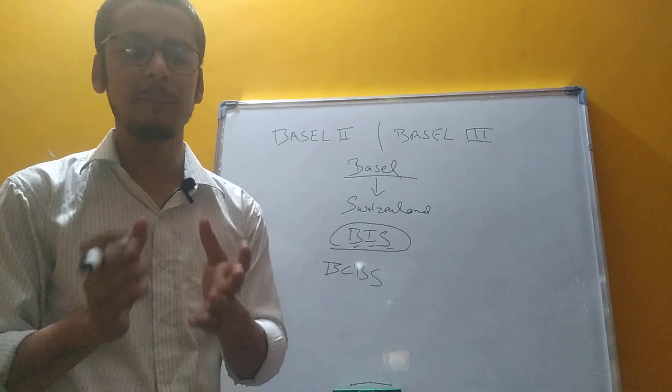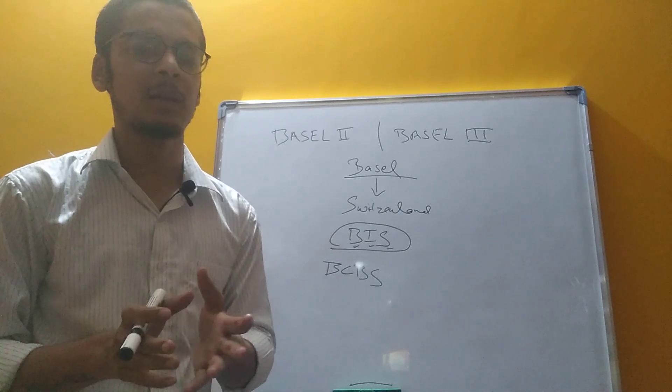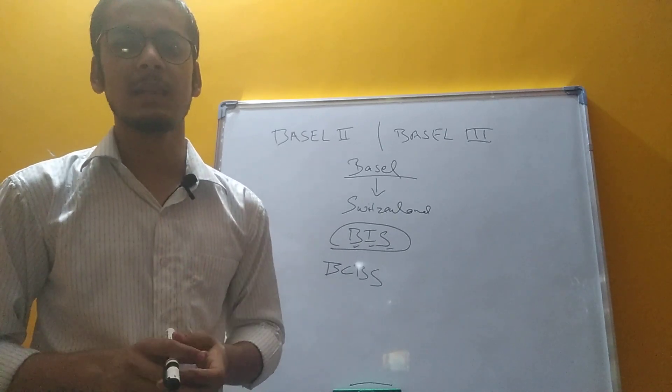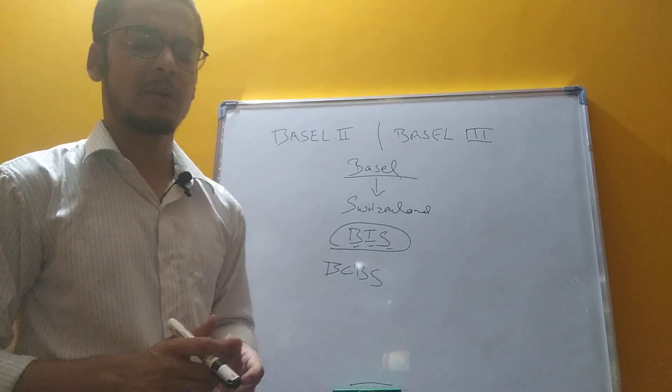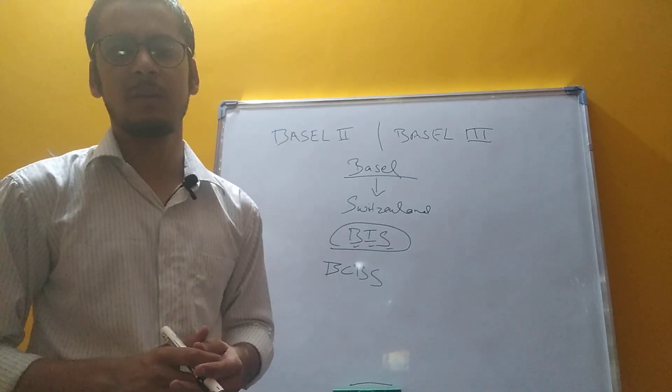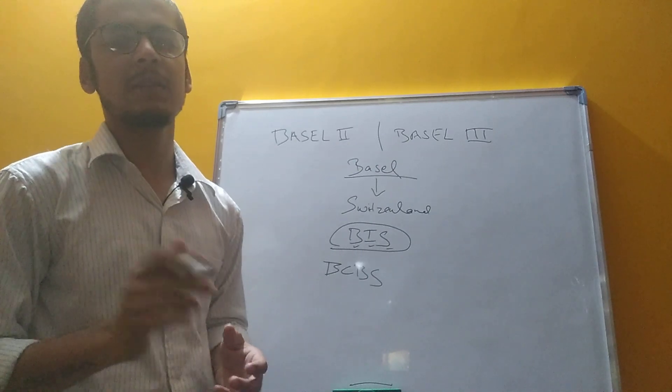In 1974, the Basel Committee on Banking Supervision (BCBS) was formed from G10 countries.